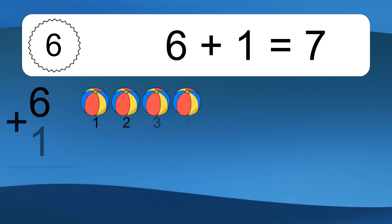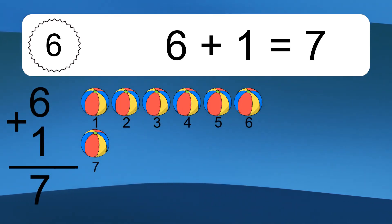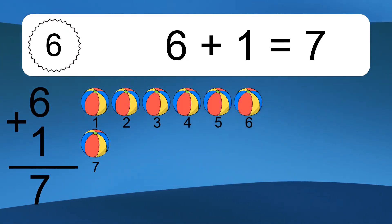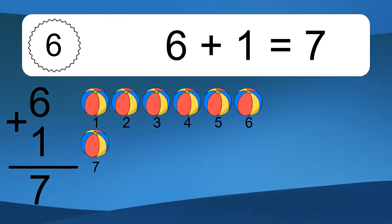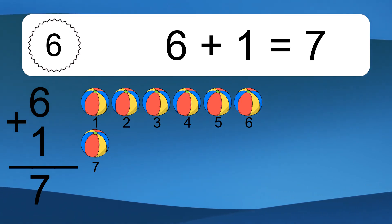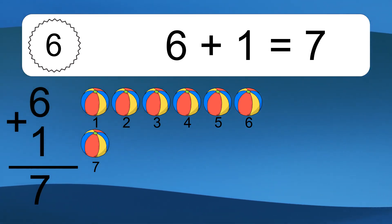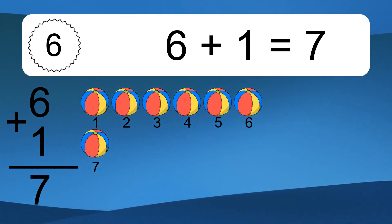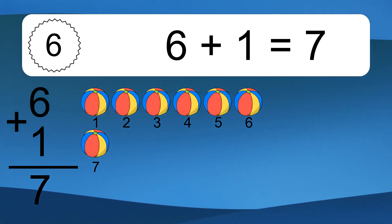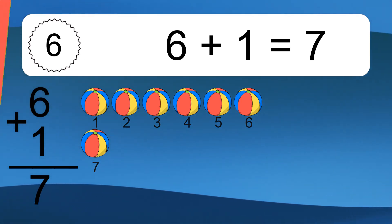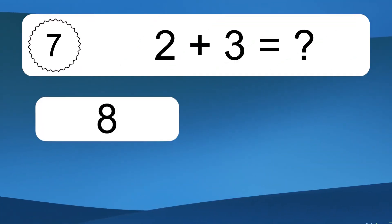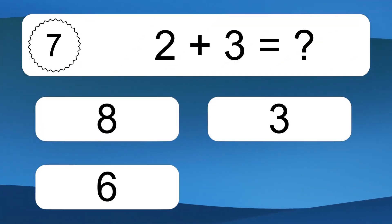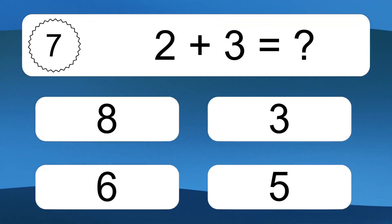6 plus 1 equals what? 6 plus 1 equals 7. Let's count it. 1, 2, 3, 4, 5, 6, 7.